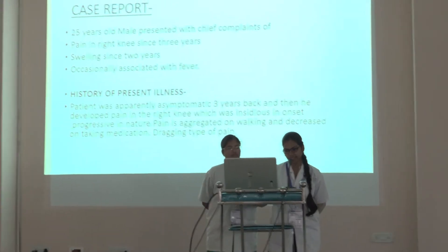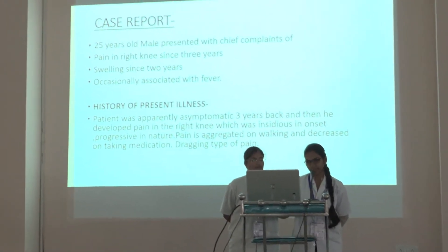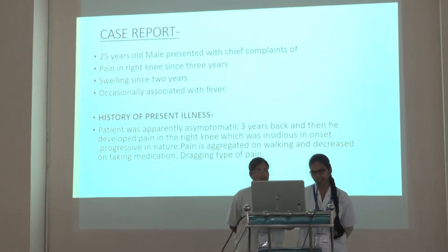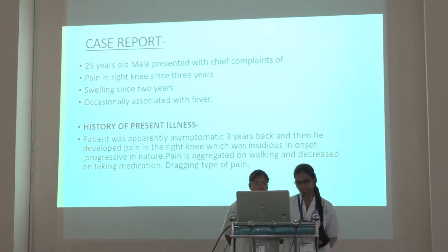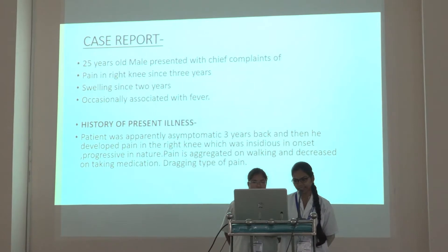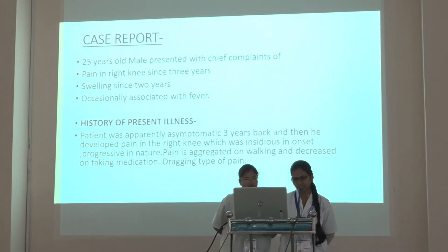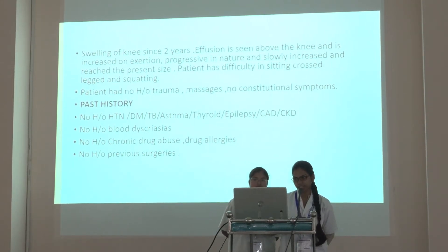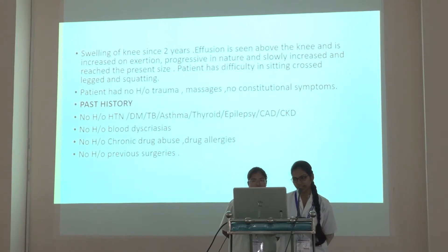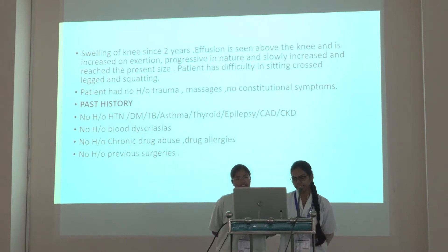History of present illness: The patient was apparently asymptomatic 3 years back and then developed pain in the right knee which was insidious in onset, progressive in nature. Pain is aggravated on walking and decreased on taking medication. The pain was also dragging in nature. Swelling of the knee since 2 years — effusion is seen above the knee and is increased on exertion, progressive in nature and slowly increased to the present size. Patient has difficulty in sitting cross-legged and squatting.